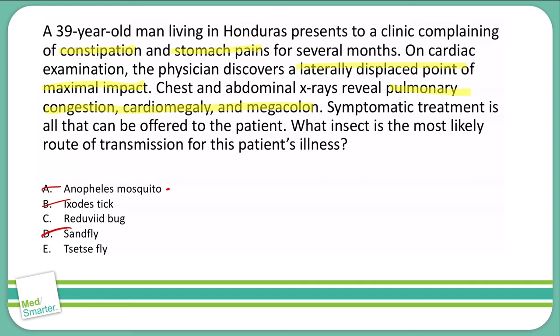Let's go back to C, the reduviid bug. Everything I remember points to Chagas disease. Chagas disease gives us things that would fit here: pulmonary congestion is a possible side effect, and cardiomegaly is definitely associated with Chagas disease. So from what I'm recalling, I think C fits best, and I'm going to go with C as my final answer.